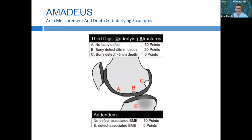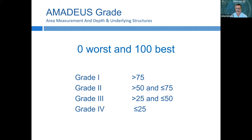The third component is the underlying structure. If there is no bony defect, we get a high score. A small bony defect gives 20 points, and a larger bony defect gives zero. Associated bone marrow edema also influences this score. Combining all components gives a grade and a number between 0 and 100, where 100 is the best possible score — no cartilage defect and no pathology.